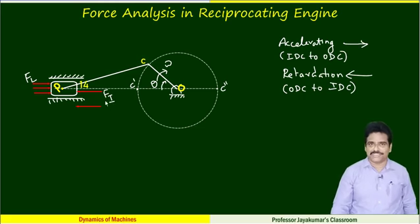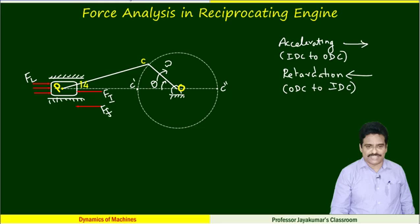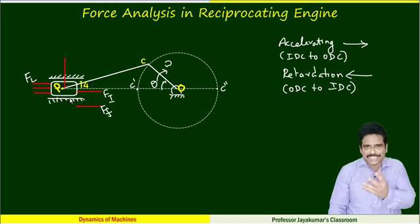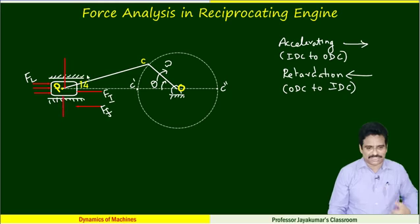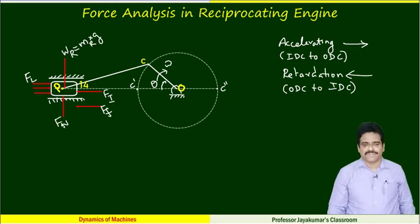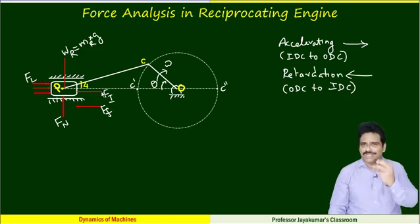For the acceleration position, the other forces acting on the piston are the weight of the piston acting downwards. Because of its weight, the cylinder walls will exert a normal reaction on the piston. The weight of the reciprocating parts is mass × g. All the horizontal components can be summed into one component — we call it piston effort.